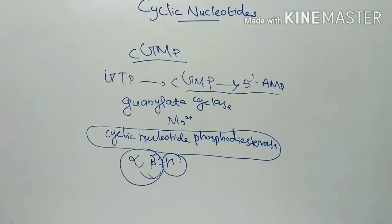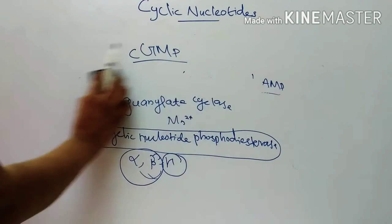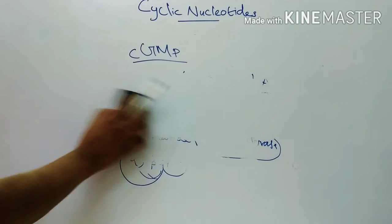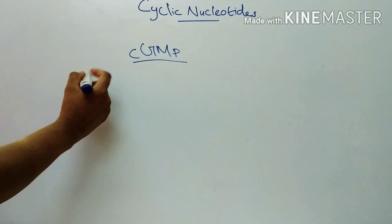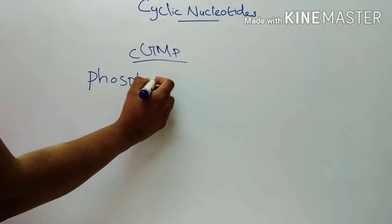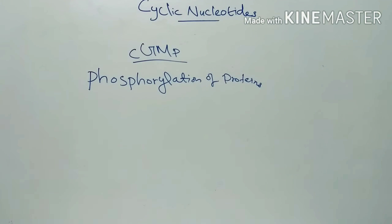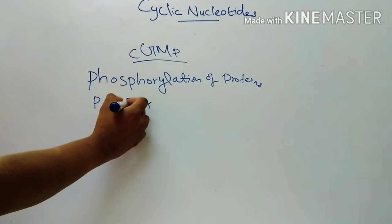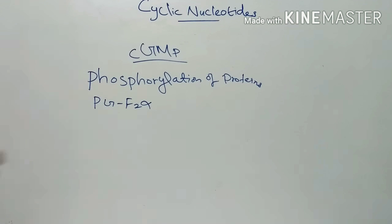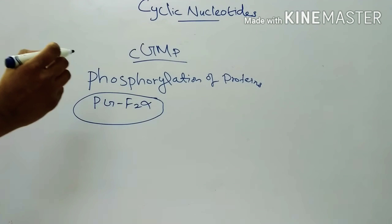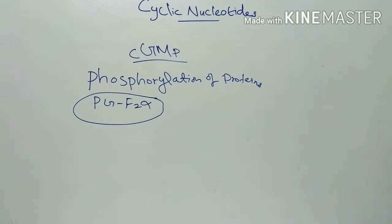Functions of cyclic GMP: cyclic GMP plays a role in phosphorylation of proteins. The muscarinic action of acetylcholine on smooth muscles is mediated through cyclic GMP-dependent phosphorylation. Prostaglandin GF2 alpha uses cyclic GMP as a second messenger for its actions.